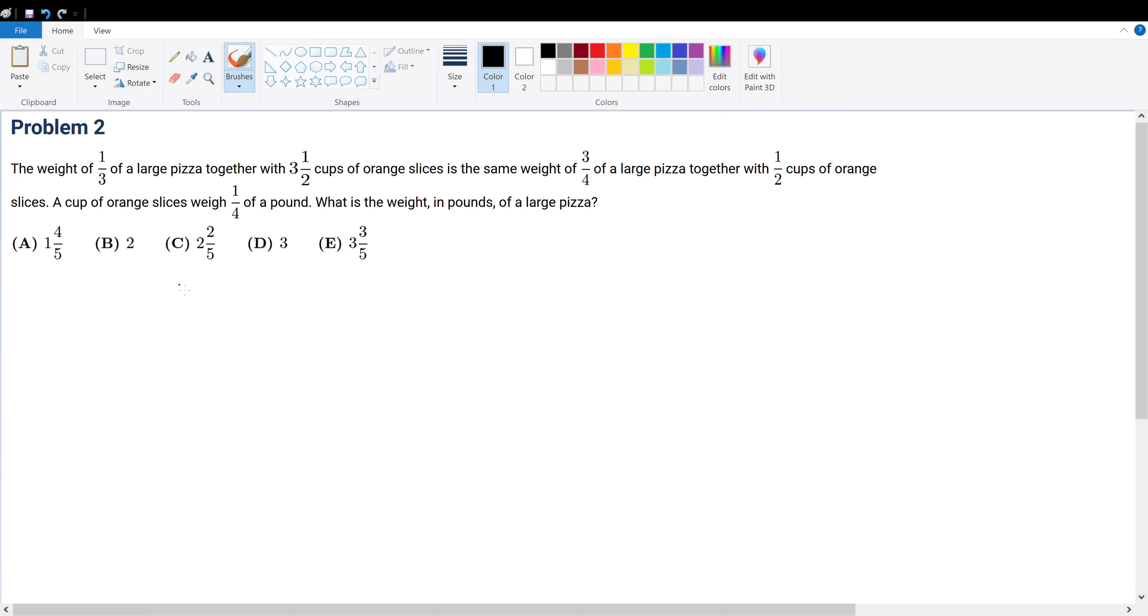Let's first quantify this statement. Assume that a large pizza is p and that one cup of orange slices is o. So that means one-third of a large pizza...